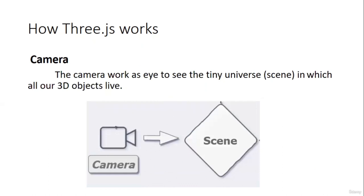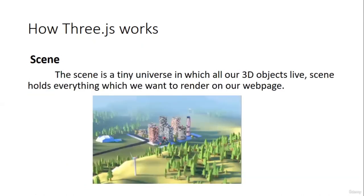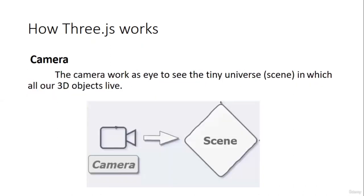So camera works as the eye to see the tiny universe — the scene — in which all our 3D objects live. Next is mesh. Mesh is the most common kind of visible object used in 3D computer graphics. The 3D object in Three.js is generally known as mesh. These are used to display all kinds of 3D objects — cats, dogs, humans, trees, buildings, flowers, mountains, and more.